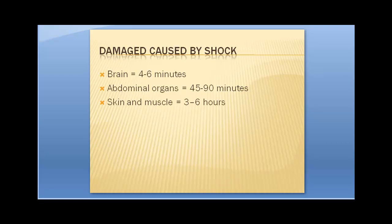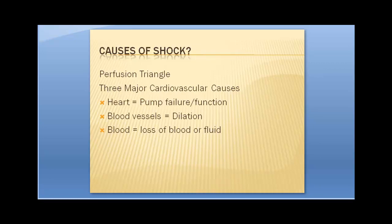Abdominal organs give you a little bit more time — 45 to 90 minutes depending on the organ, especially if they're cool, because the cells don't use as much oxygen and their metabolism is slowed down. Skin and muscle: three to six hours. But it's the brain that we're most concerned about, especially with shock. It's going to be the first to die off.